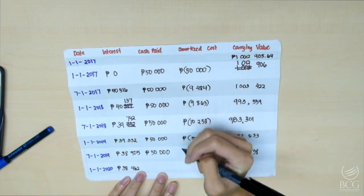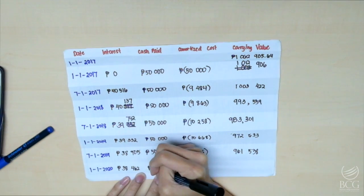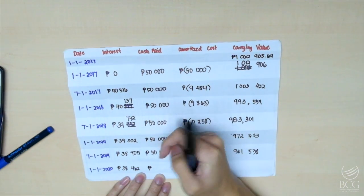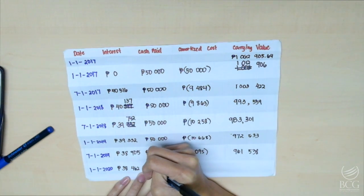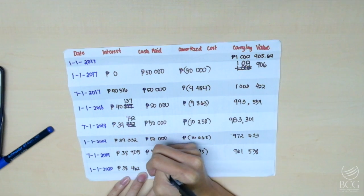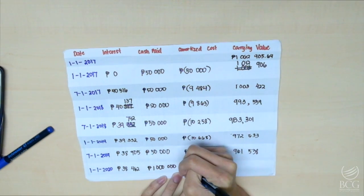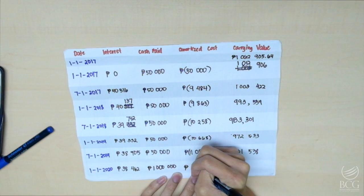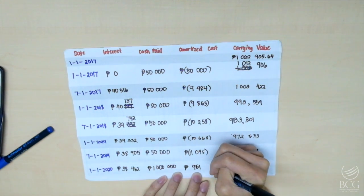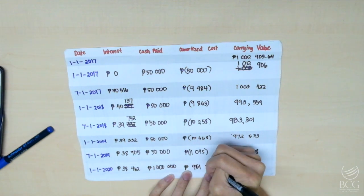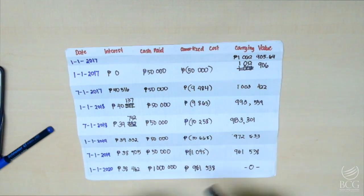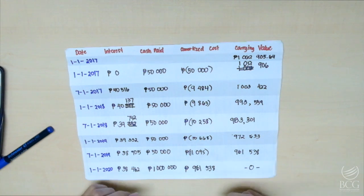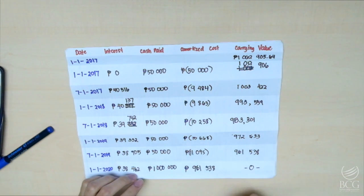For our last cash paid at maturity, we're not going to include any more interest since it was already paid in advance upon acquisition. Hence, the cash paid only at maturity will be the principal, which is $1,000,000. As usual, the amortized cost should equal the previous carrying value, and we're going to get zero. That is the amortization table for the problem with annuity due.